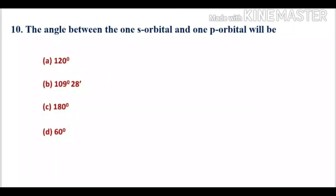Question number 10: the angle between one S orbital and one P orbital. Options: A, 120 degrees; B, 109 degrees 28 minutes; C, 180 degrees; D, 60 degrees.